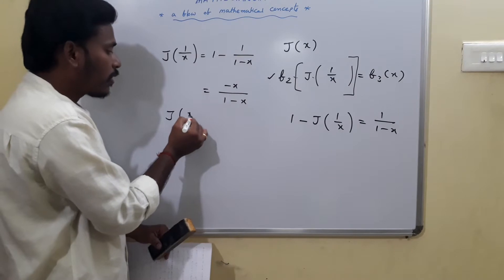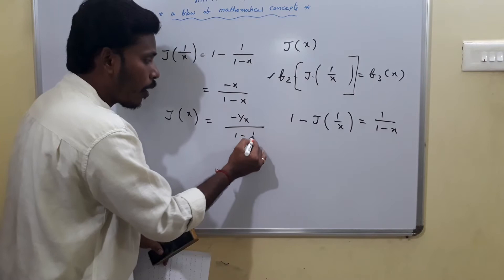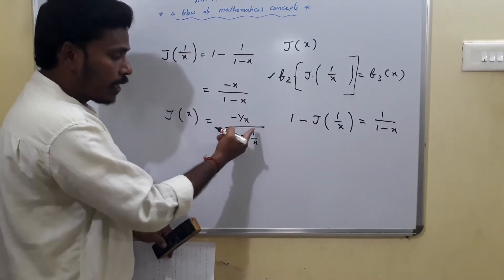So now, J of 1 by x is nothing but J of x, and here minus 1 by x divided by 1 minus 1 by x. And if you take LCM, I have that minus 1 by x minus 1.